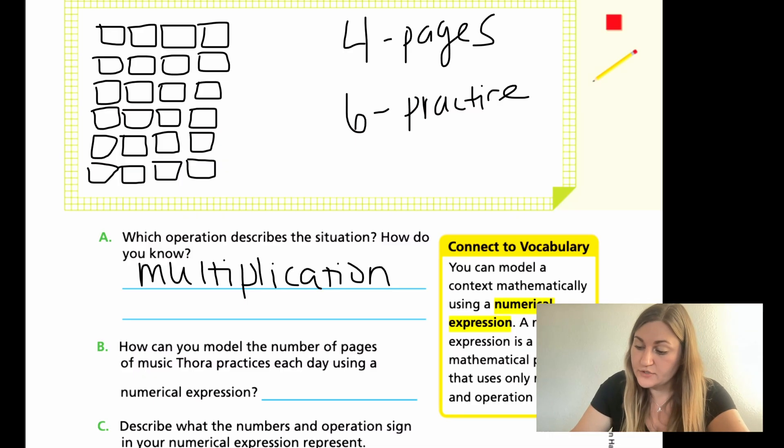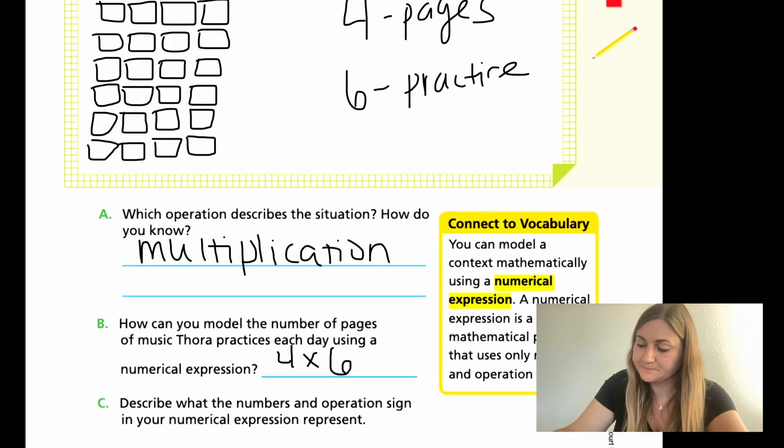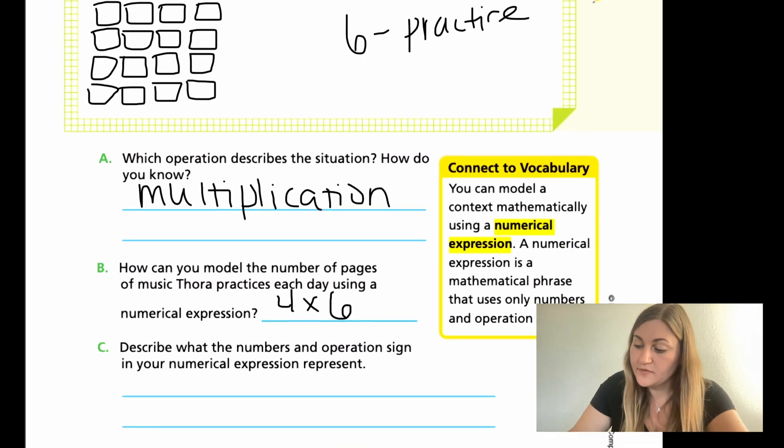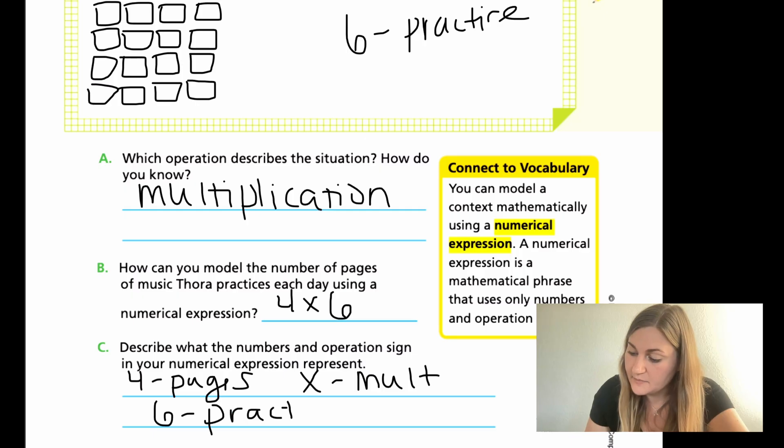For B, you want to model our numerical expression. So, we have our four pages. We know we're multiplying, and we know we're going to be multiplying those four pages six different times. So, our expression would be four times six. And then describe what the numbers and operations sign in your numerical expression represent. So, again, just like at the top, the four are the pages. That X is our multiplication. And our six is the practice amount.